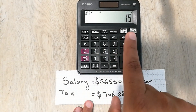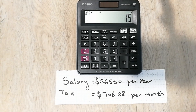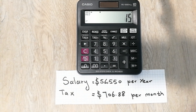So fifteen percent is the tax rate you are paying on your annual income. This is how you can find out the tax rate. I hope you understand the concept. Please like my video and subscribe to my channel. Thank you very much.